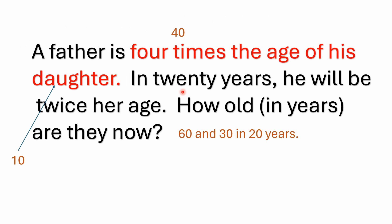So yeah, you go back and look at the original problem. The father is four times the age of his daughter. So that makes him currently 40. It makes her currently 10. And yeah, in 20 years, he'll be twice her age. So that would make 60 and 30 be the ages, which makes sense. 60 divided by 30 is 2. So he'd be twice as old.